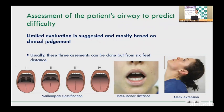Three tests can be done from a distance of six feet: Mallampati classification for oropharyngeal structure visibility, inter-incisor distance for degree of mouth opening, and neck extension — which is important for aligning the oral, laryngeal, and pharyngeal axes during laryngoscopy. These three assessments can be observed from a social distance.